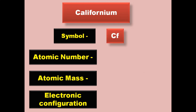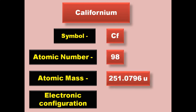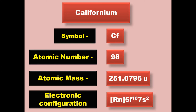Californium has symbol Cf, atomic number 98, atomic mass 251.0796, electronic configuration [Rn] 5f10 7s2. Californium is an actinide and exists in solid form at room temperature.